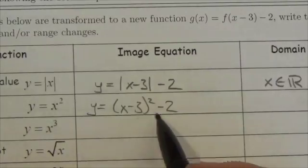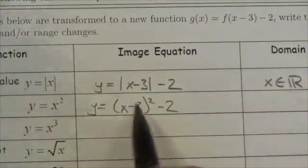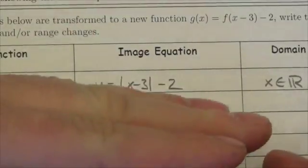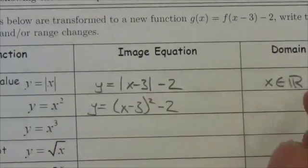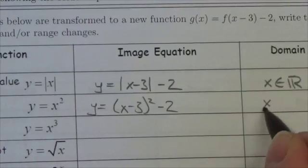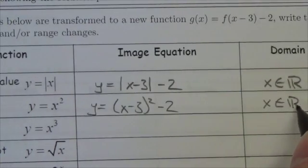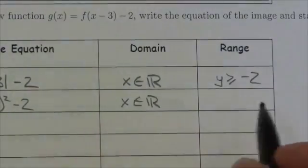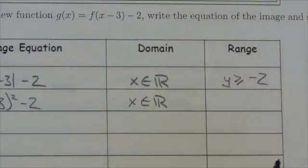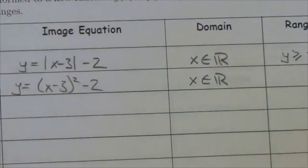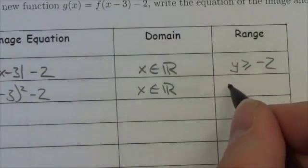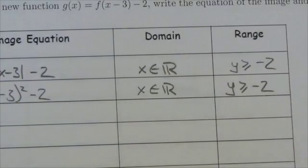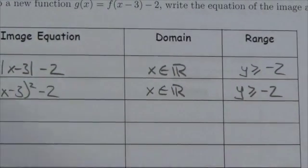Think about what a quadratic looks like. Before I transform it, the original domain and range would be: domain is an element of the reals, and the range would be greater than or equal to 0. Translations won't change the domain. However, the range used to be greater than or equal to 0, but now it's been moved 2 down, so that's going to turn this into y is greater than or equal to negative 2, just like it did with the previous function.